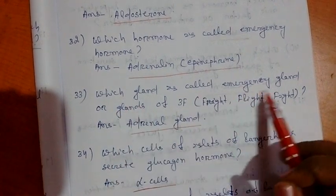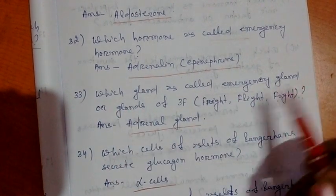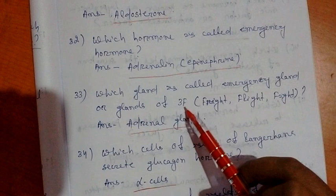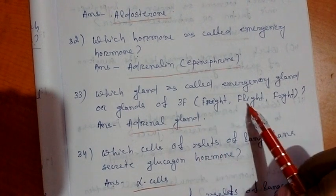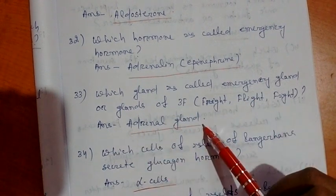Question 33. Which gland is called emergency gland or glands of 3F? 3F means fright, flight, fight. That is adrenal gland.